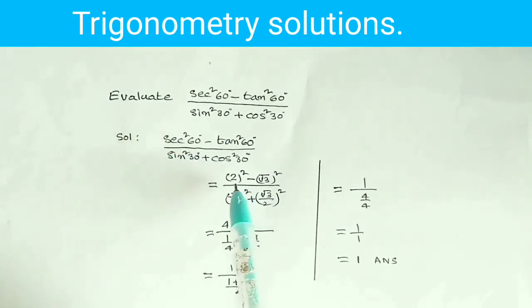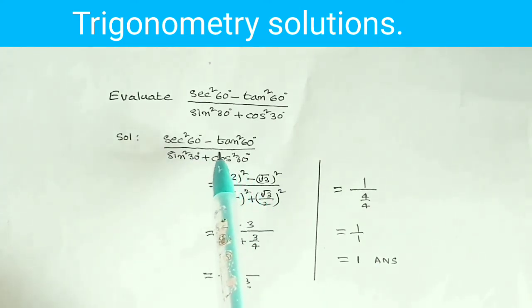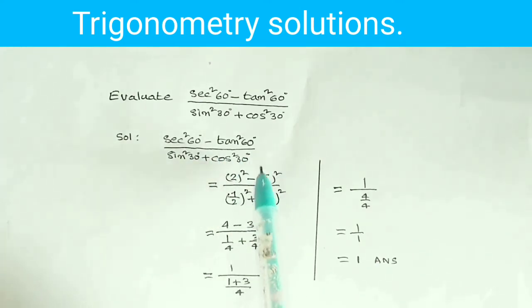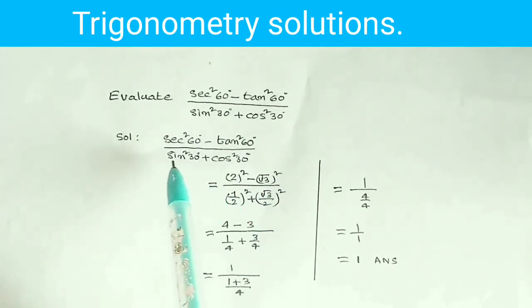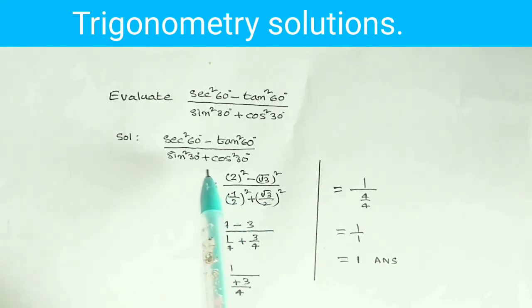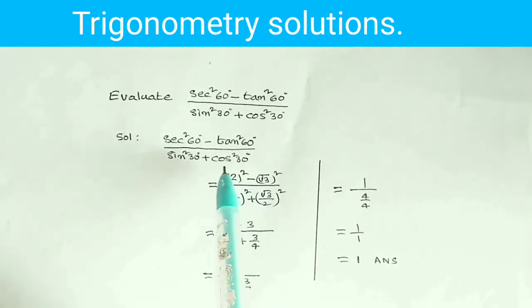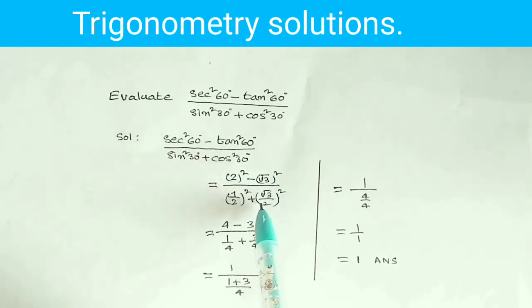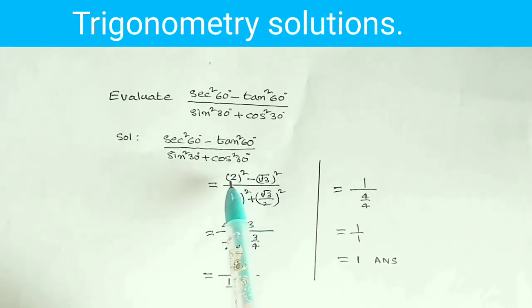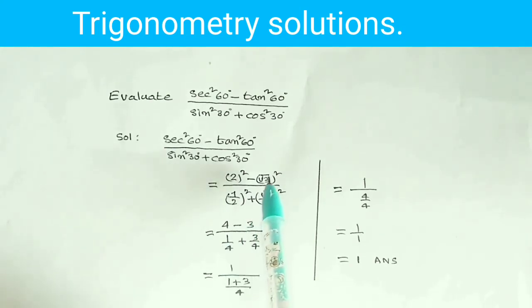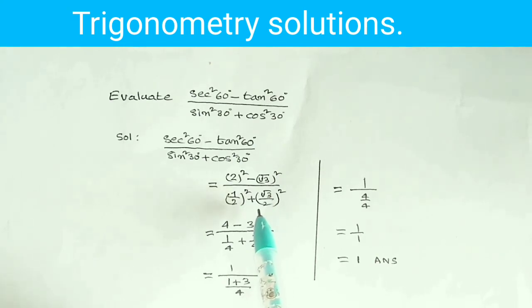Secant 60 degrees is 2, squared gives 4. tan 60 is root 3, whole square is 3. sin 30 is 1 by 2, whole square is 1 by 4. cos 30 is root 3 by 2, whole square is 3 by 4.